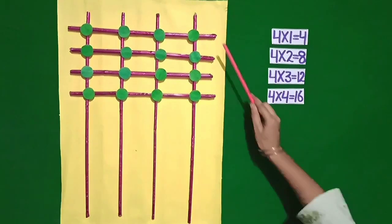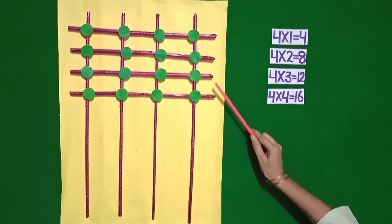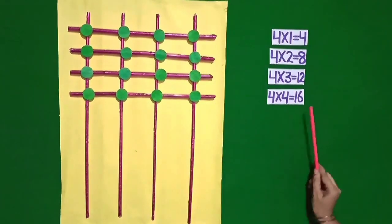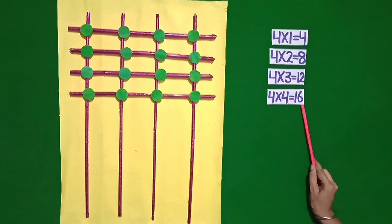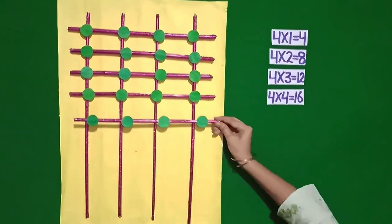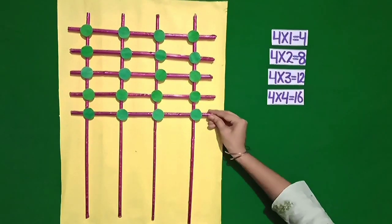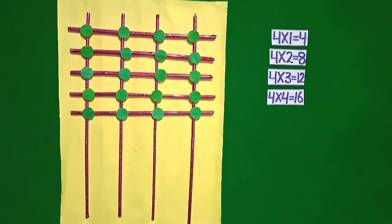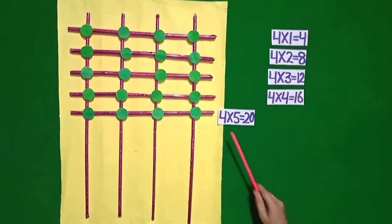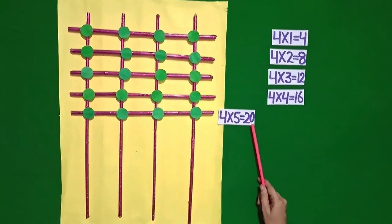Students, now there are 16 intersection points. Now I am putting one more stick in horizontal position. Students, how many intersection points are there? Yes, 20. 4 fives are 20.